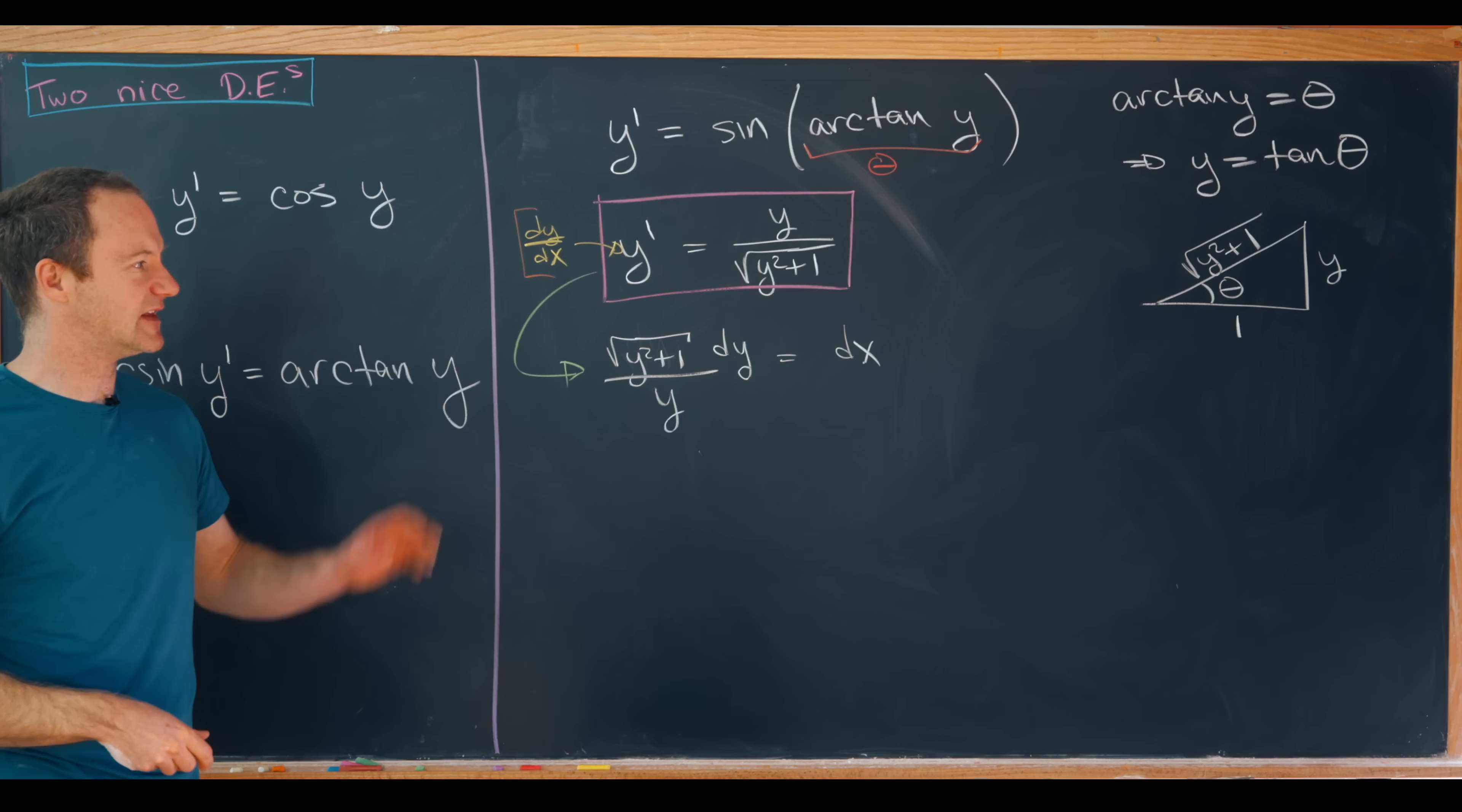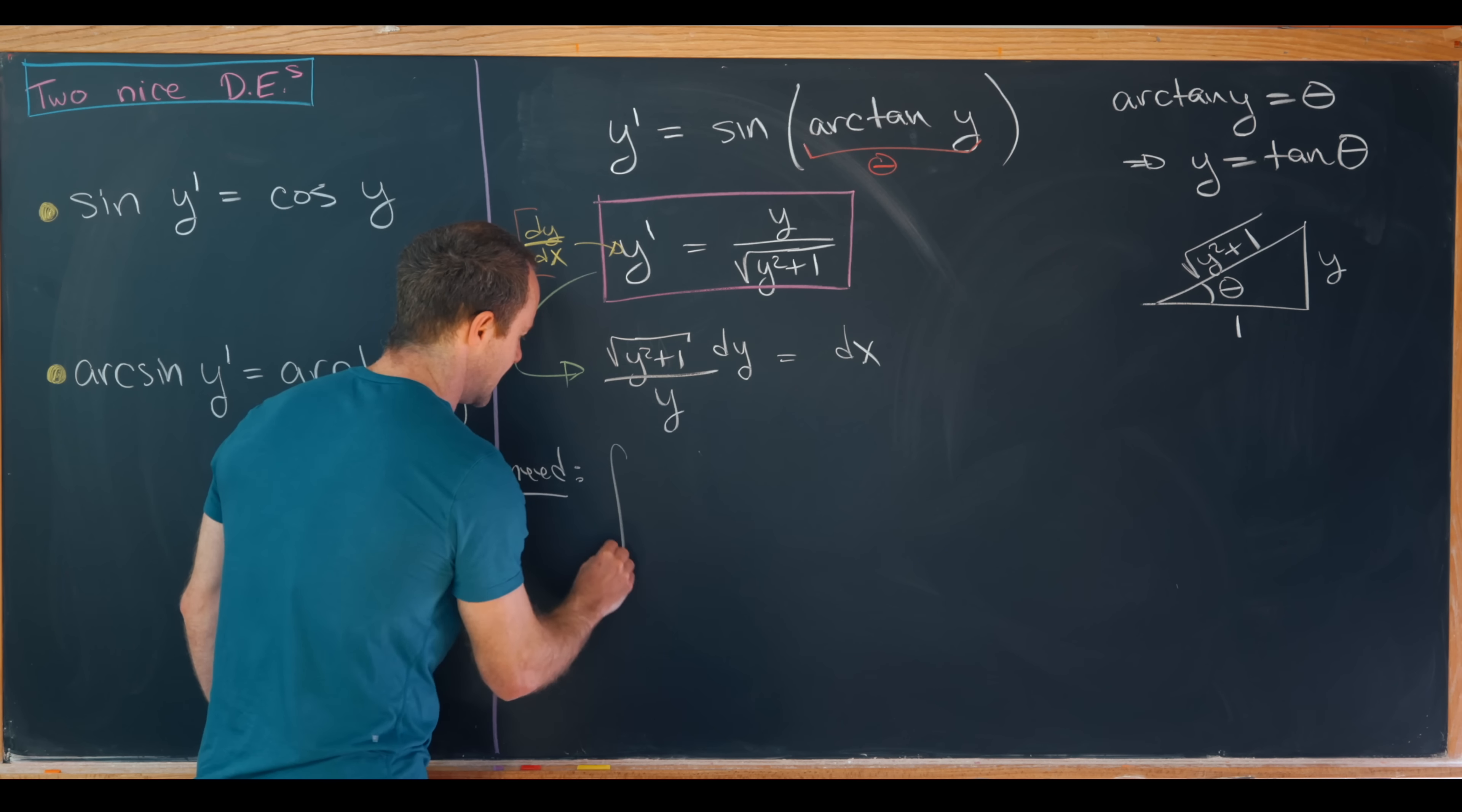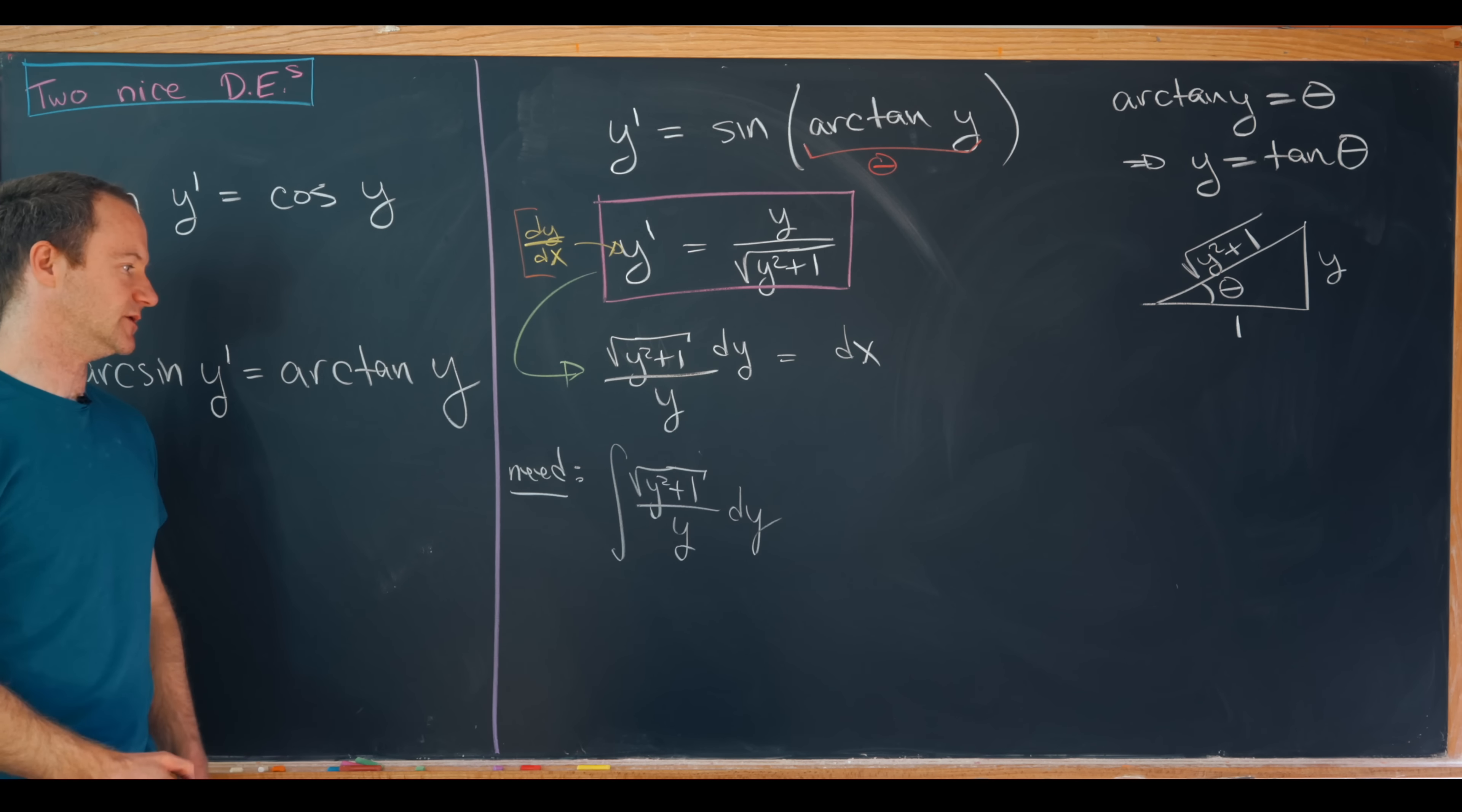Now we'd like to take the anti-derivative of both sides. So we need to find the anti-derivative of the square root of y squared plus 1 over y dy. There are a number of different ways to do this. Perhaps you could do a trigonometric substitution.